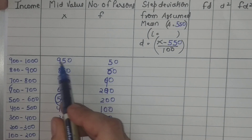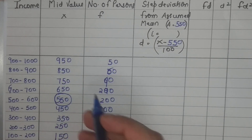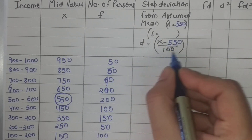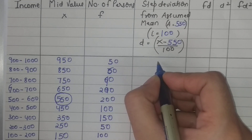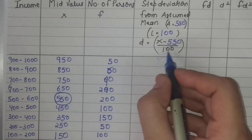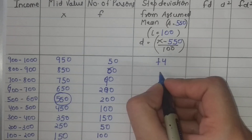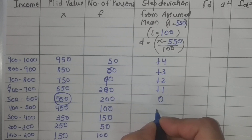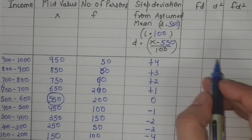Computing d = (x − 550)/100: 950 → +4, 850 → +3, 750 → +2, 650 → +1, 550 → 0, 450 → −1, 350 → −2, 250 → −3, 150 → −4. The next step is finding fd — multiplication of the frequency column and d column.